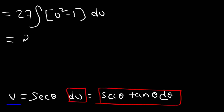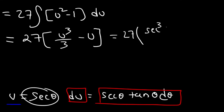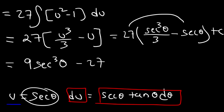The antiderivative of u squared is u cubed over 3, and the antiderivative of 1 is u. Since u equals secant theta, we have 27 times secant cubed over 3 minus secant theta, plus C. Simplifying, 27 divided by 3 is 9, giving 9 secant cubed minus 27 secant theta plus C.